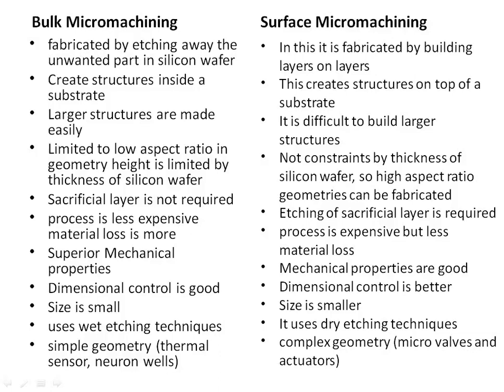Surface micromachining: Fabricated by building layers on layers; creates structures on top of a substrate. Difficult to build larger structures. Not constrained by thickness of silicon wafer, so high aspect ratio geometries can be fabricated. Etching of sacrificial layer is required; process is expensive but less material loss. Mechanical properties are good; dimensional control is better. Size is smaller. Uses dry etching techniques. Applications include complex geometry, micro valves, and actuators.